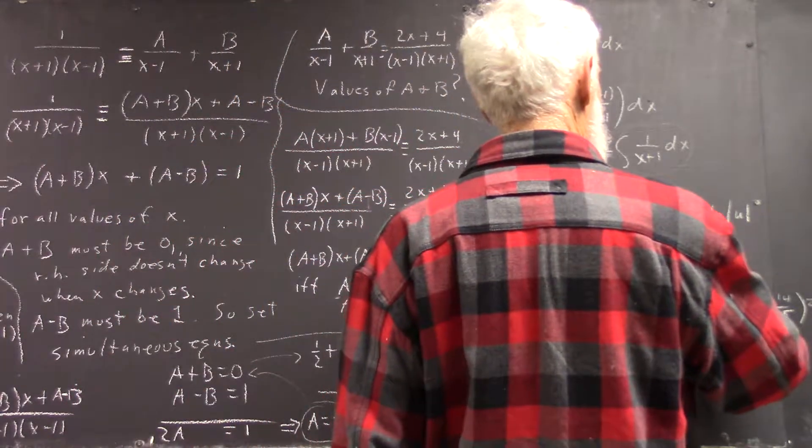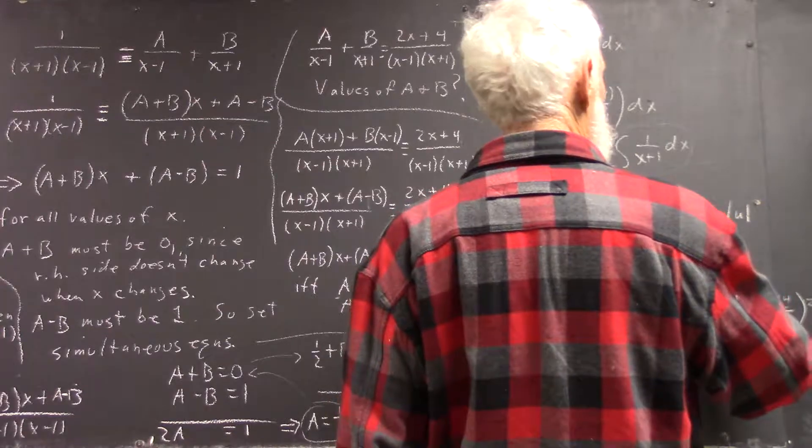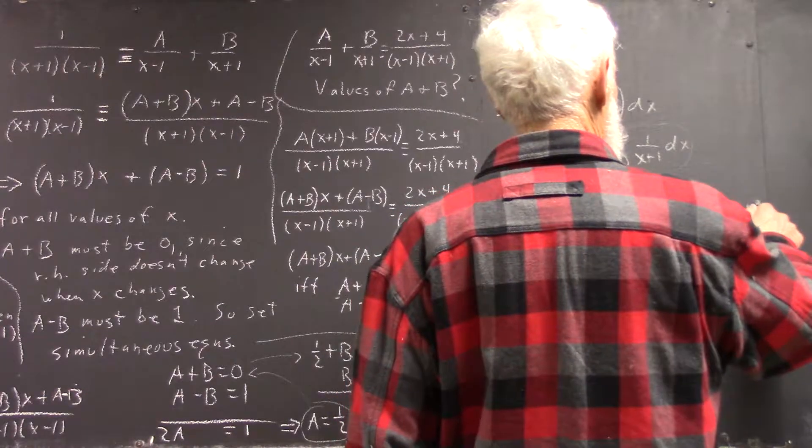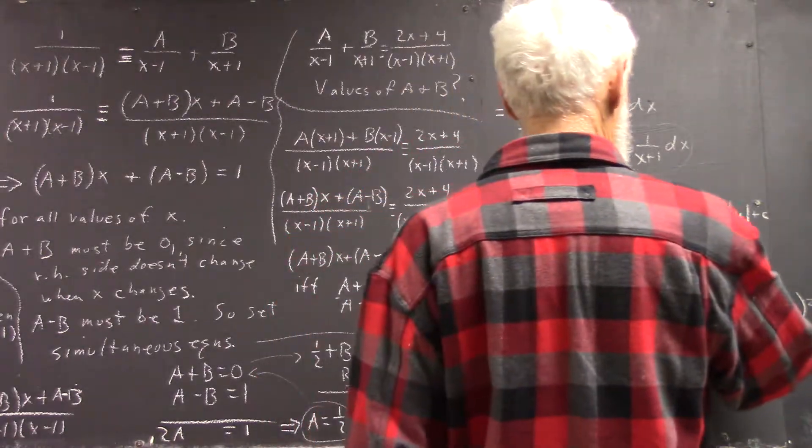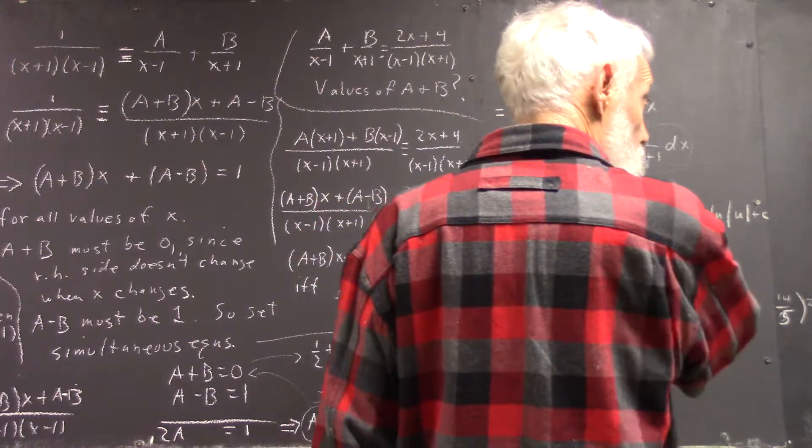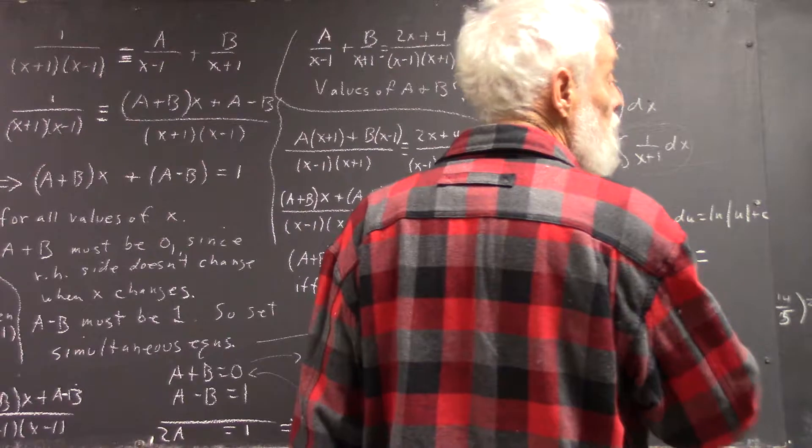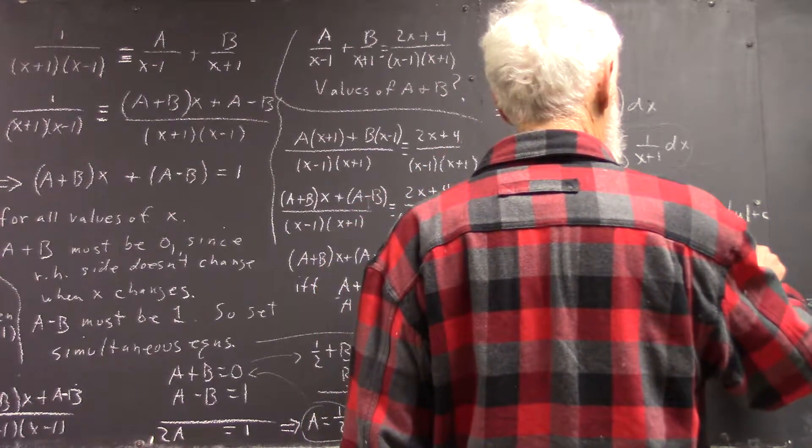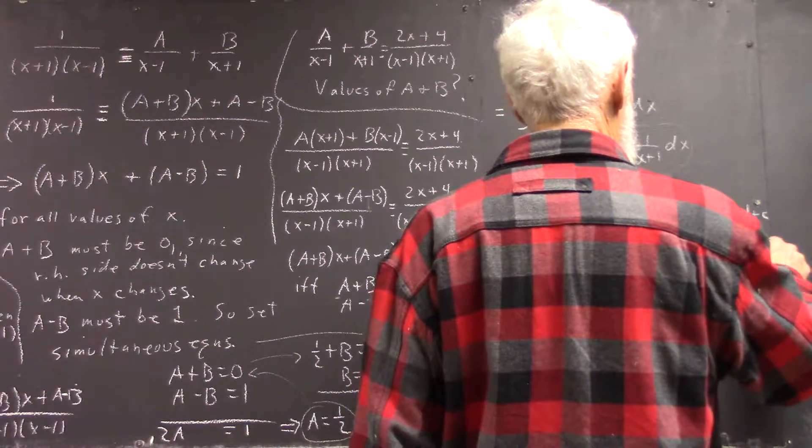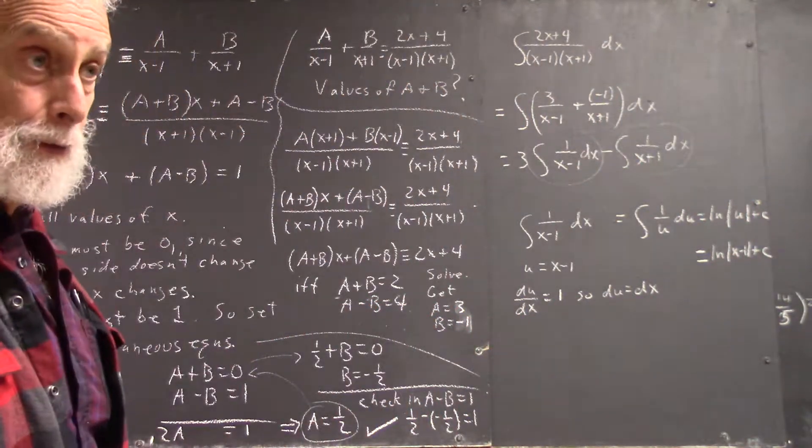And that equals, of course, plus a constant, complete, because that constant is also important. So this is the natural log of the absolute value of x minus 1 plus a constant, right?